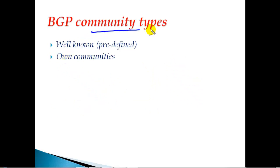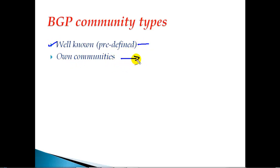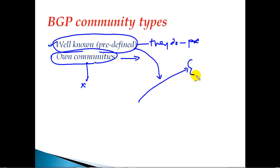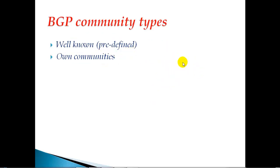In this section we'll continue and try to understand BGP community types. There are two major categories: the first is well-known predefined community attributes, and then we can also define our own attributes. Predefined means the community attributes and their behavior are already defined - we know exactly what they do. Whereas with our own communities, we decide what the upstream router has to do with that community attribute.